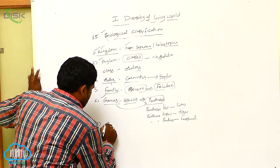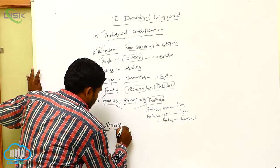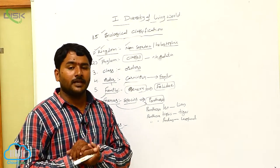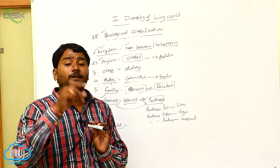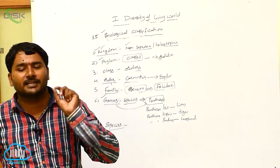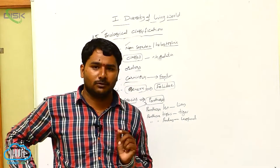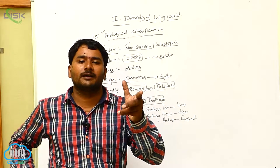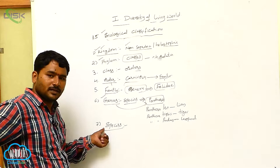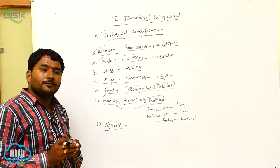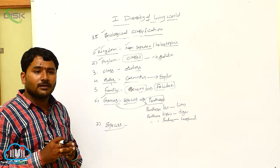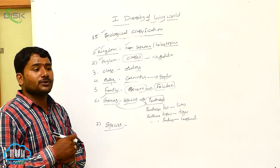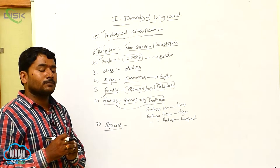Next one is species. Species is a group of similar individuals which share a common gene pool and produce fertile offspring.